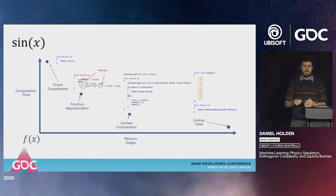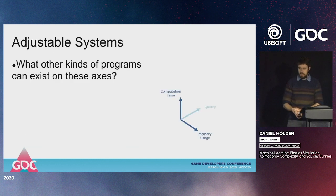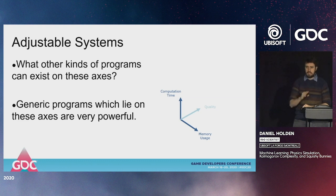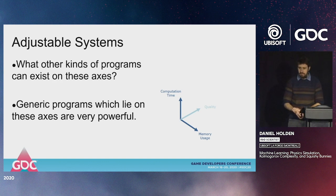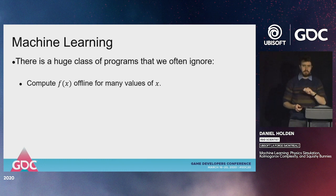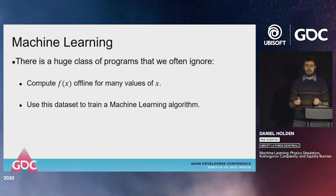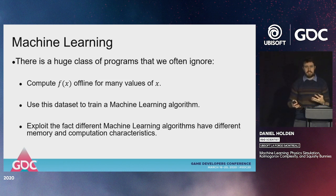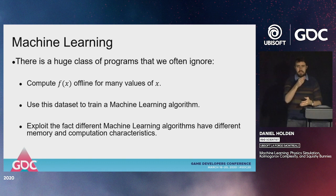So what other programs can exist on these axes? There's actually a huge class of these programs which we often ignore in game development: machine learning algorithms. The idea is that we pre-compute the function offline for many different input values, use this as a dataset to train a machine learning algorithm — pairs of inputs and outputs. Different machine learning algorithms have different computation and memory characteristics, placing them in different positions on this graph.